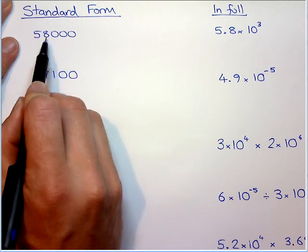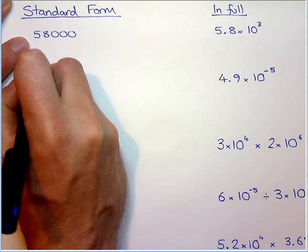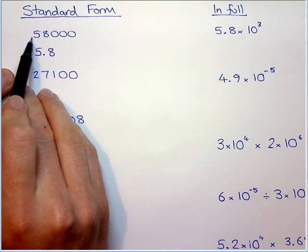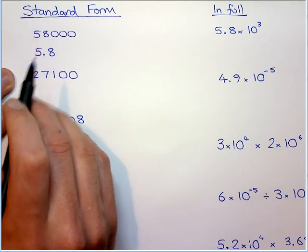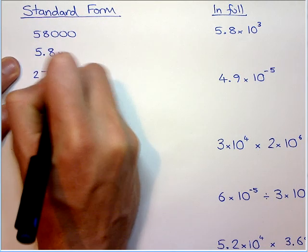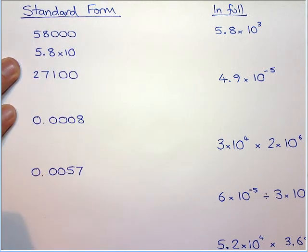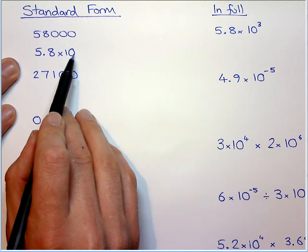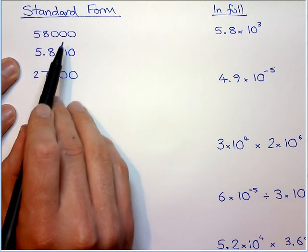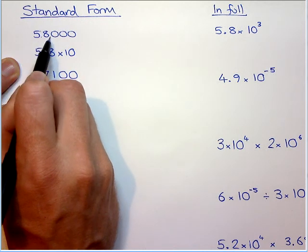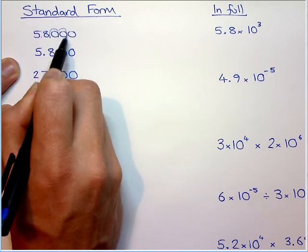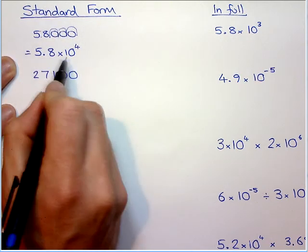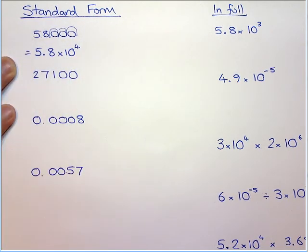So 58 obviously is bigger than that, so what we're looking for is 5.8. If we put the point here, that would be less than 1, so it has to be more than 1, but less than 10. And standard form always has a times and a 10. So we're saying to ourselves, 5.8 times 10, how many times, is 58,000. So if the point is here, we have to times it by 10, 1, 2, 3, 4 times. So we say 5.8 times 10 to the 4 is the same as 58,000.